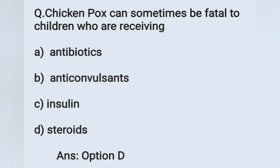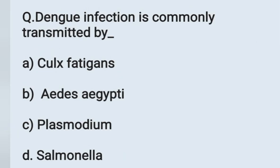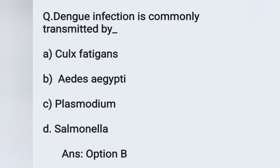Next question: Dengue infection is commonly transmitted by — option A: Culex fatigans, option B: Aedes aegypti, option C: Plasmodium, option D: Salmonella. Dengue fever is caused by the Aedes aegypti mosquito. Option B is the correct answer.